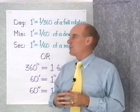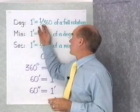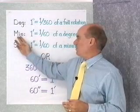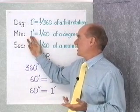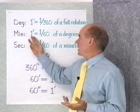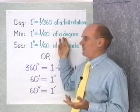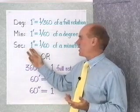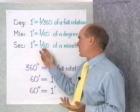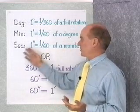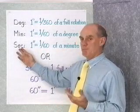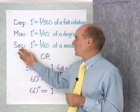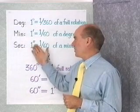As you know, 1 degree of angle measure is 1/360th of a full rotation. 1 minute of angle measure, abbreviated with a prime symbol, is 1/60th of a degree. And 1 second, abbreviated with a double prime, is 1/60th of a minute. So there are 60 seconds in 1 minute and 60 minutes in 1 degree for angle measure.